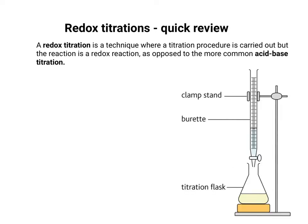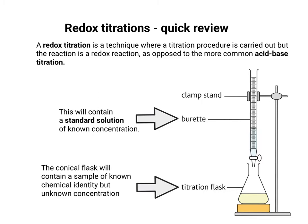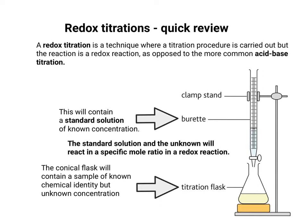In terms of the practical equipment, it's identical to a normal titration, except what goes in the burette and what goes in the titration flask are slightly different. The burette will contain a standard solution of known concentration, and the conical flask will contain a sample of known chemical identity but unknown concentration. The key is that the standard solution and the unknown react together in a specific mole ratio in a redox reaction.